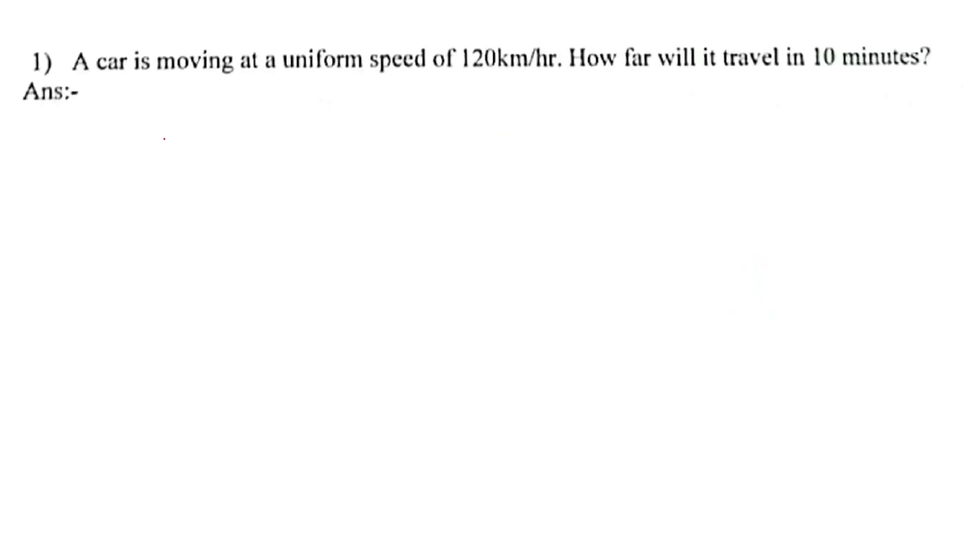So let's start solving. Question number 1: A car is moving at a uniform speed of 120 km per hour. How far will it travel in 10 minutes? The question says uniform speed, meaning the speed is not changing. How far will it travel in 10 minutes? How far means distance. Distance equals speed times time. Speed is given as 120 km per hour, and time is given as 10 minutes.